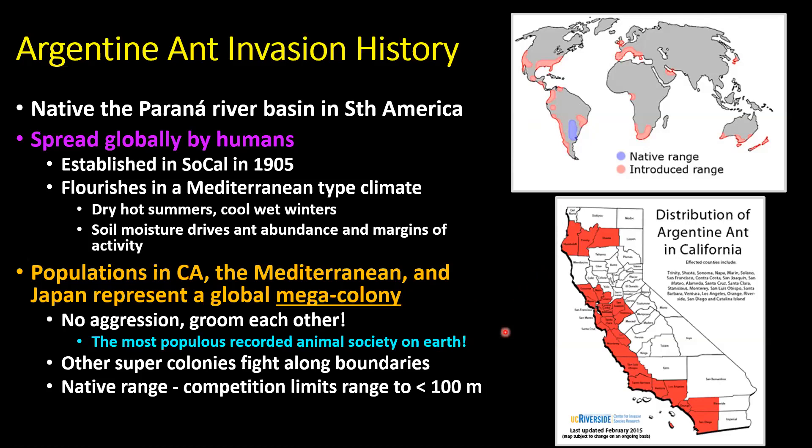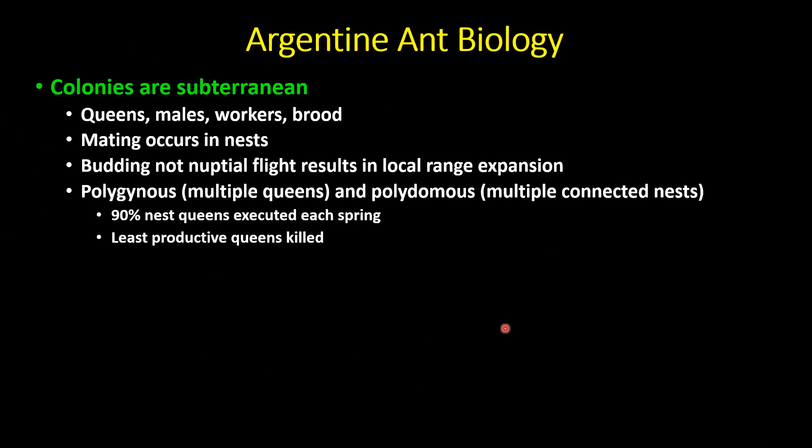A little about the biology: colonies are subterranean, meaning nests are underground and contain queens, males, workers, and brood — the developing larvae and pupae. Mating between males and females occurs in nests; they don't have nuptial flights. The way they spread locally is through a phenomenon called budding, where nests grow, some queens split off, move a short distance, and start another nest. In many instances, nests can be polygynous — multiple queens — and polydomous, meaning multiple connected nests form sprawling interconnected colonies through citrus orchards and urban areas.